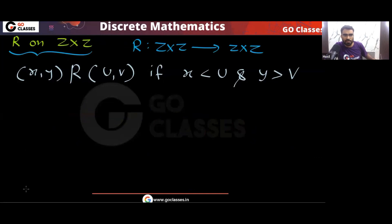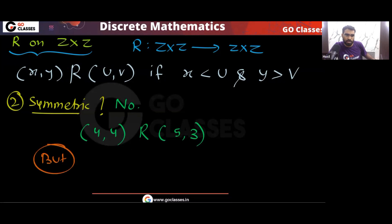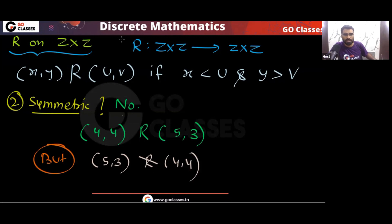Let's also check the other properties. Is this relation symmetric? No. For example, (4, 4) is related to (5, 3), since 4 < 5 and 4 > 3. But (5, 3) is not related to (4, 4), since 5 is not less than 4. So this relation is not symmetric.